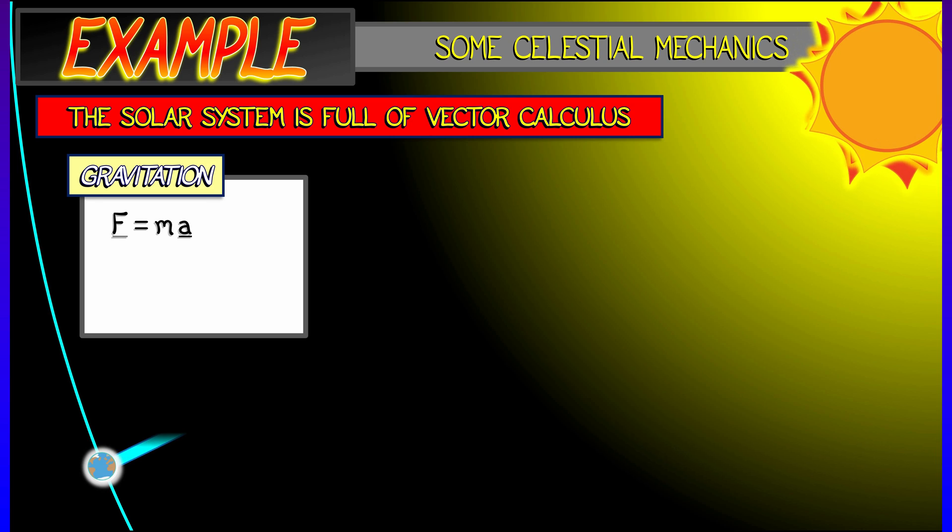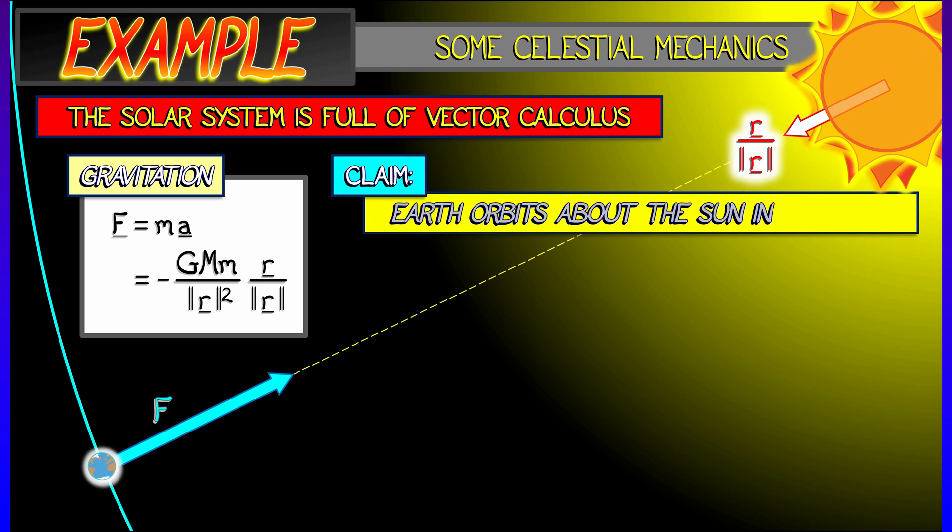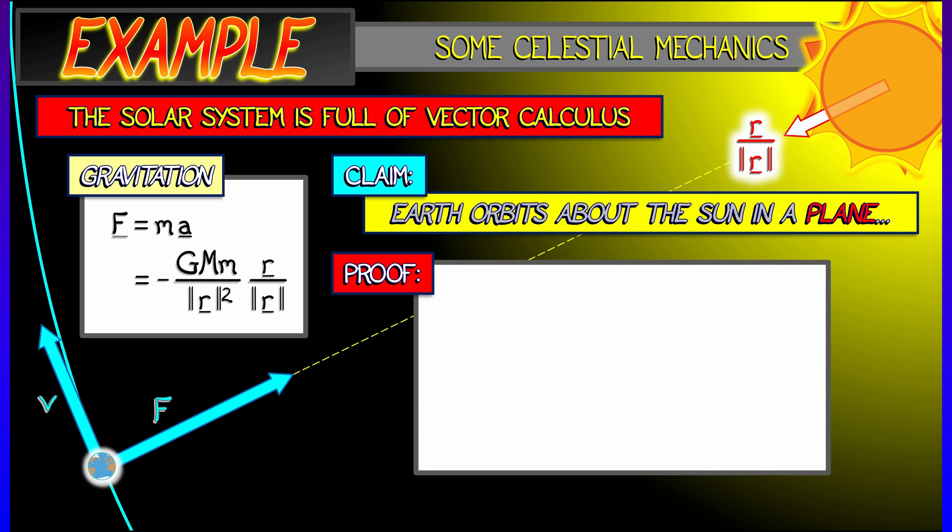Oh, because of gravity, right? F equals ma. And there's gravitational rule for that that says that force is going to be in the direction of the position vector r from the sun to the earth. The magnitude of it depends on the gravitation constant on the masses, et cetera, et cetera. But what we want to do is show that the earth orbits about the sun in a plane using this gravitation rule and a little bit of derivatives.